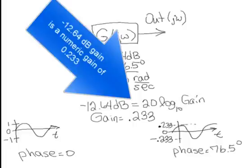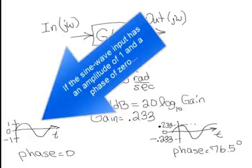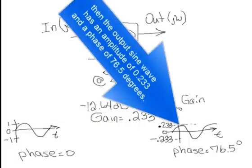Negative 12.64 dB gain is a numeric gain of 0.233. If the sine wave input has an amplitude of 1 and a phase of 0, then the output sine wave has an amplitude of 0.233 and a phase of 76.5 degrees.